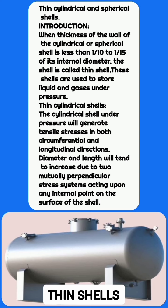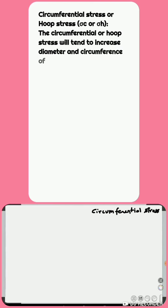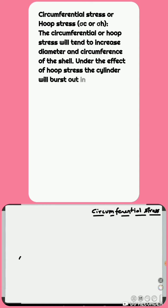The cylindrical shell under pressure will generate tensile stresses in both circumferential and longitudinal directions. The diameter and length will tend to increase due to two mutually perpendicular stress systems acting upon any internal point on the surface of the shell. Under pressure, the stresses developed inside thin shells are called internal stresses, and these are of two types.